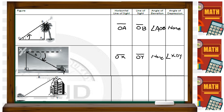We start naming your angles from the horizontal line going to the line of sight. For the third figure — OTR — the horizontal line of sight is ray OR, and the line of sight is OT. There's no angle of elevation, and the angle of depression is angle ROT.